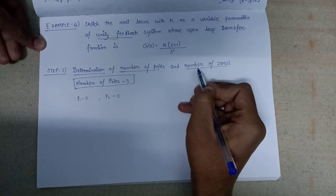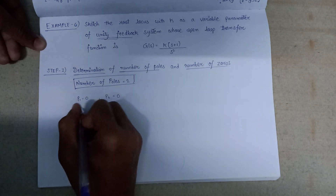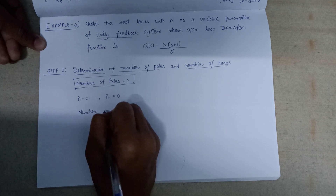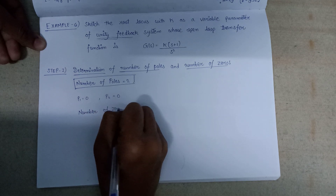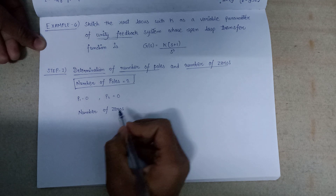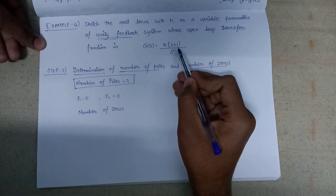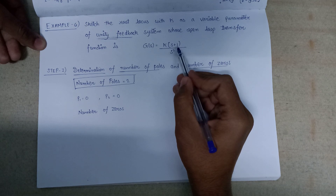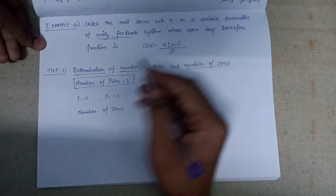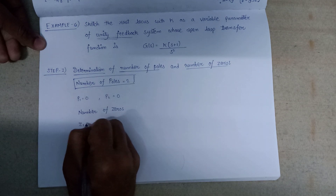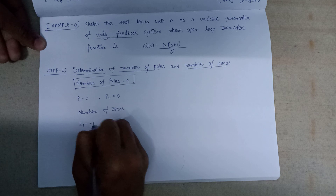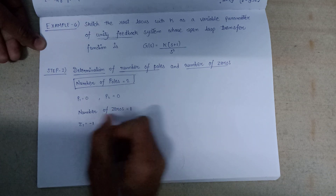Moving on to the next calculation, that is the number of zeros. On equating the numerator to zero, on equating s + 1 = 0 we get one zero at s = −1. So z1 lies at s = −1. The number of zeros is exactly equal to 1.